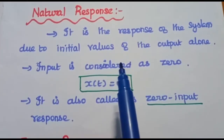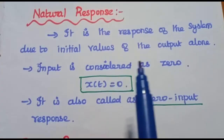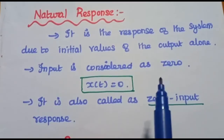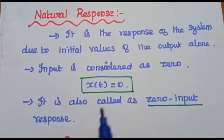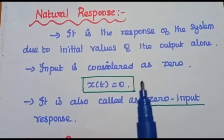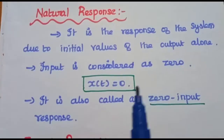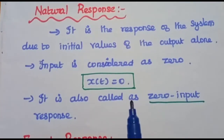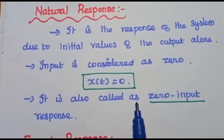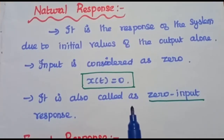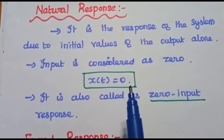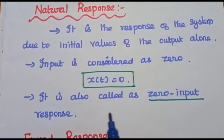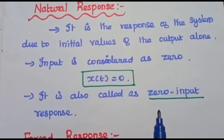Natural response is the response of the system due to initial values of the output alone. Here we have to consider the input signal as 0, that is x of t is equal to 0. The best example for this natural response is an oscillator circuit. An oscillator is a device which can generate waveforms without any input signal. The response of the oscillator is known as natural response, and due to this zero input condition, we can also call it the zero input response.